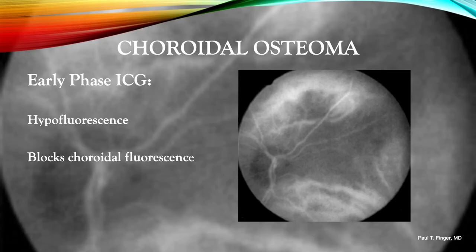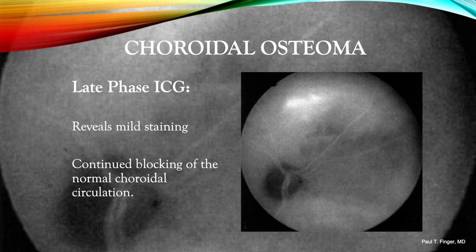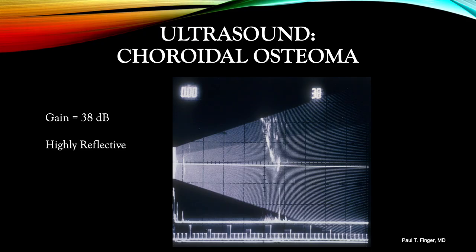In this early phase ICG angiograph, the dye has trouble entering the tumor, which blocks the view of the choroidal circulation. In contrast, the late-phase ICG demonstrates continued blocking of the normal choroidal circulation. However, I would be remiss if I didn't add this clinical pearl: I suggest you always perform an ultrasound for suspected choroidal osteomas. With the gain turned down to a minimum, in this case 38 decibels, the calcific tumor echoes will persist. This is unlike other choroidal tumors.